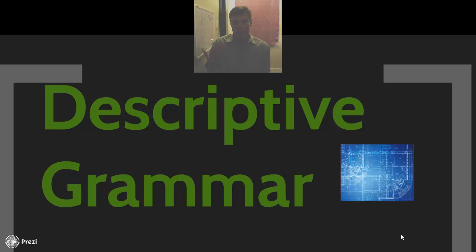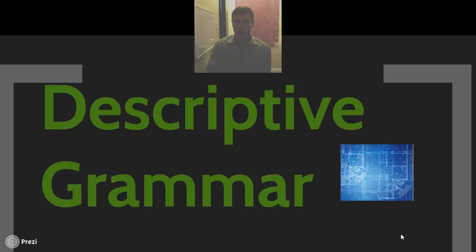Mental grammar is the one that's really most interesting because it gets into the human mind. But the human mind is a black box and so we can't get at it directly, which brings us to descriptive grammar. This is where we're trying to model that mental grammar in order to find out how our minds work.